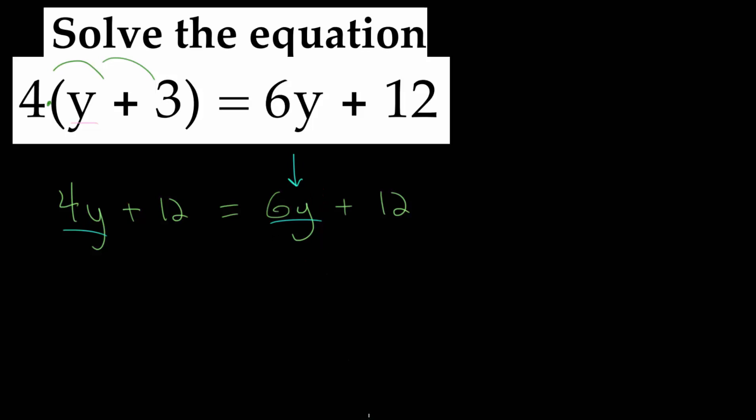To avoid that, just move them to the side of the equation with more of that variable. To cancel out this 4y, we can imagine this as a positive 4y and cancel that out by using subtraction. We can subtract 4y on each side of the equation. This becomes 0y, or just 0, and we are left with just 12 here. 6y minus 4y would be 2y, and we still have plus 12 here.